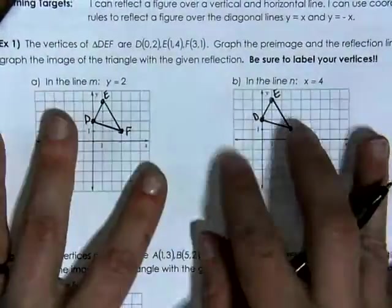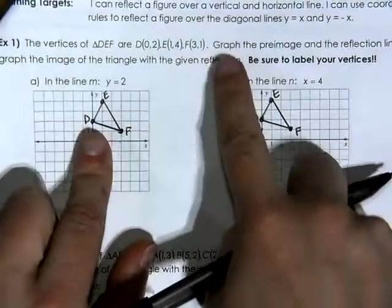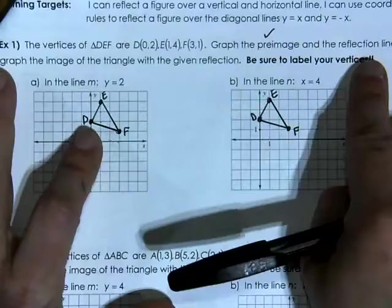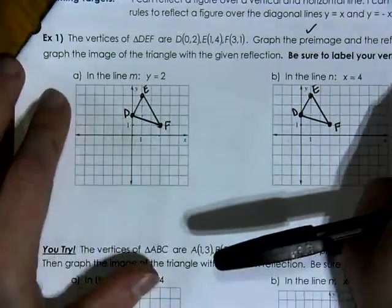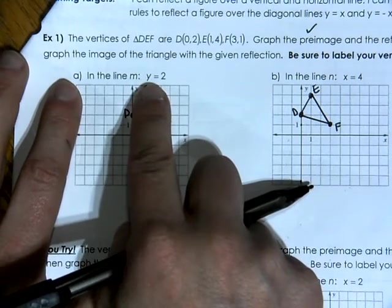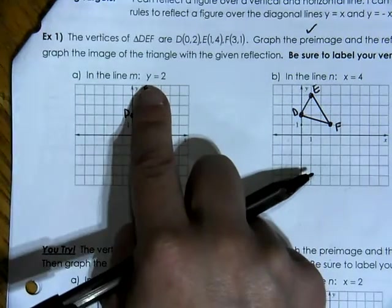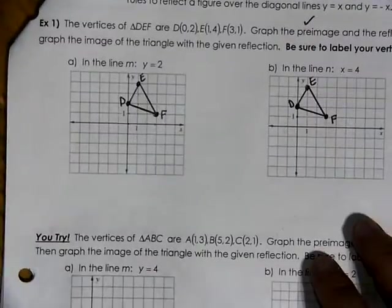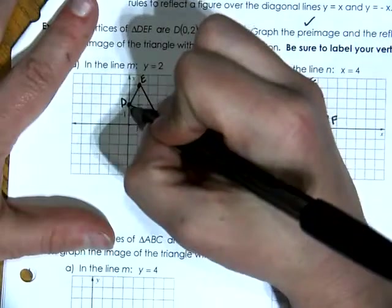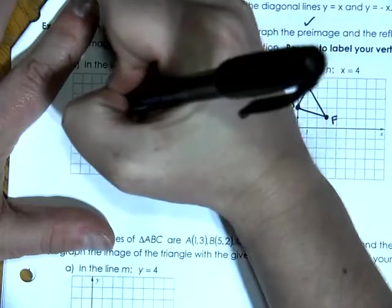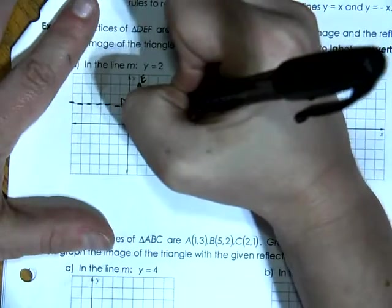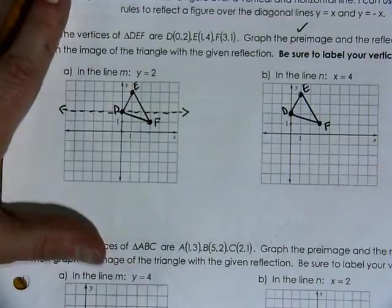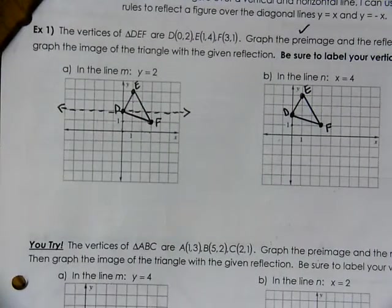Triangle DEF is our pre-image — we know it's a pre-image because there are no apostrophes. Now we are going to graph the reflection line. In letter A, the reflection line is located at y equals 2. y equals 2 is a y equals a number equation, so whenever you see y equals a number, we will be graphing a horizontal line. I'm going to go up to where y equals 2 and graph a horizontal dashed line with arrows at the ends going straight across.